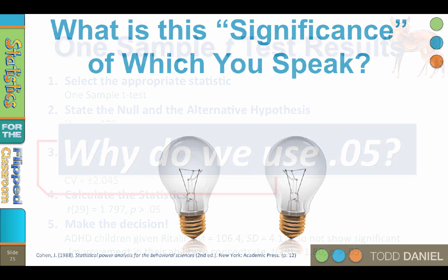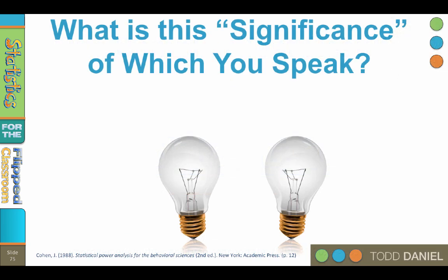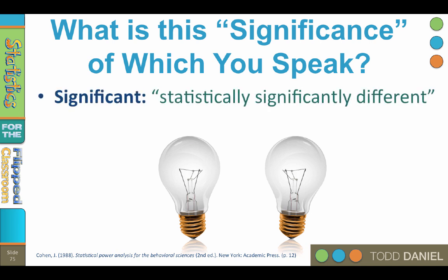Let's start by thinking about what 0.05 really means. We sometimes talk about tests being significant, but what we really mean is that the measurements are statistically significantly different. But there are different kinds of different, and if you think about it, everything is different.